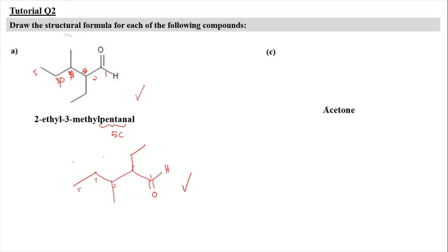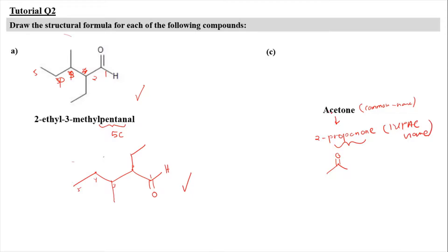For structure C, we have acetone, which is the ketone 2-propanone. Acetone is the common name; propanone (or 2-propanone) is the IUPAC name. For propanone, we don't always write the '2' because the ketone carbonyl must be at the middle carbon. For certain compounds in exam questions (PSPM), you need to know the common name — such as acetone and formaldehyde — and convert them to IUPAC names. So you draw a ketone, which is propanone.